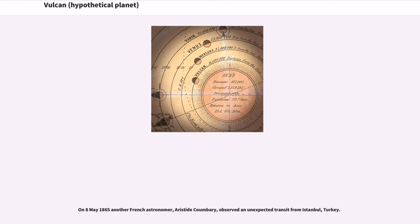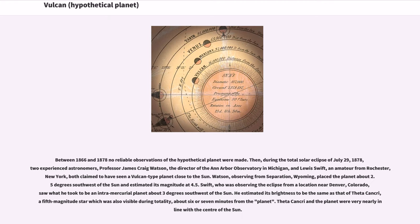On May 8, 1865 another French astronomer, Aristide Coumbary, observed an unexpected transit from Istanbul, Turkey. Between 1866 and 1878 no reliable observations of the hypothetical planet were made.